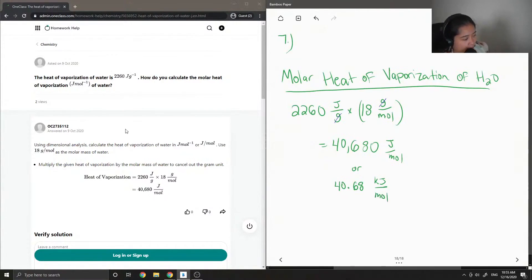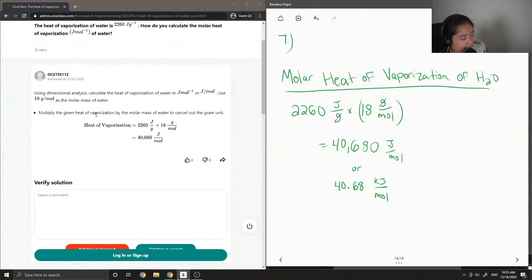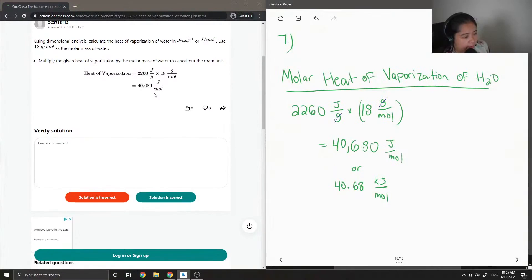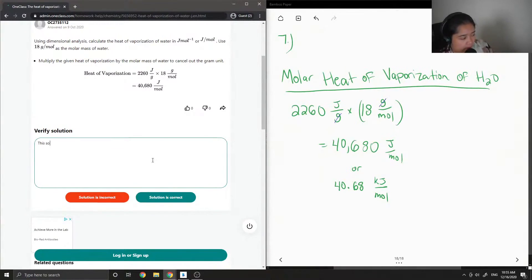Okay, so the answer key said: using dimensional analysis, calculate the heat of vaporization in joules per mole. Use 18 grams per mole as the molar mass of water. Multiply the given heat of vaporization by the molar mass of water to cancel out the gram unit, and they got 40,680. Okay, so this solution is correct.